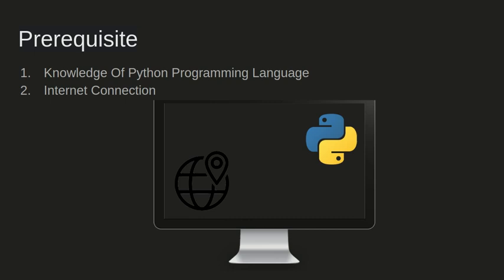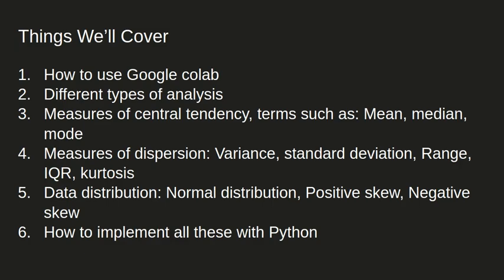We're going to be using Google Colab, so you don't need to install any libraries like pandas. All you need is a computer or laptop with an internet connection and basic knowledge of Python. You don't need Python installed locally — just the knowledge of how to program in Python.